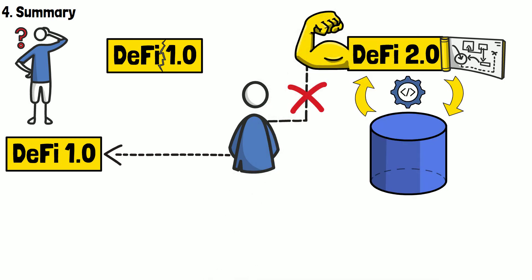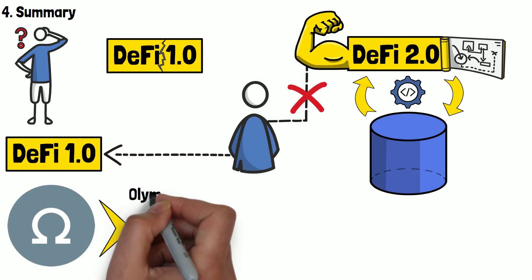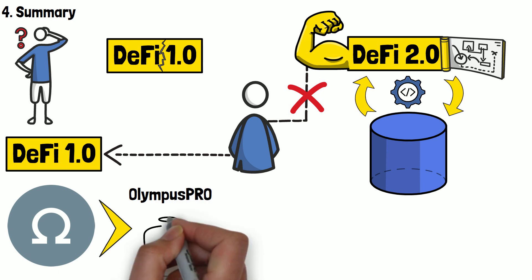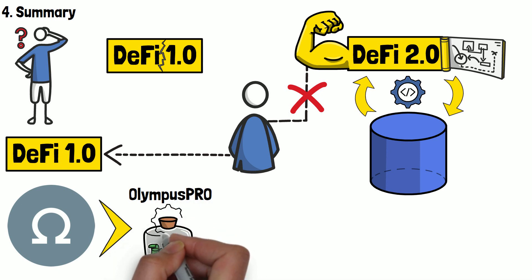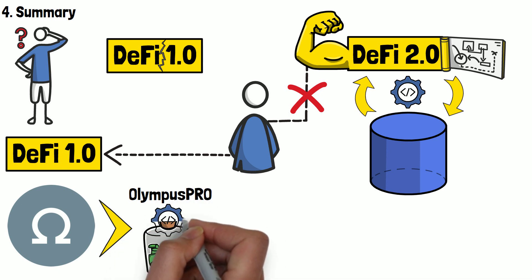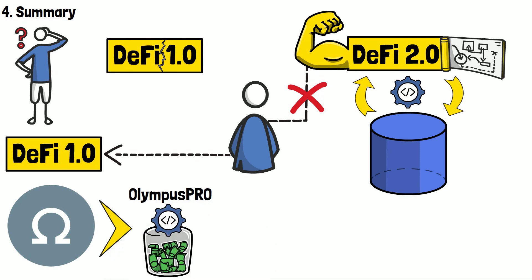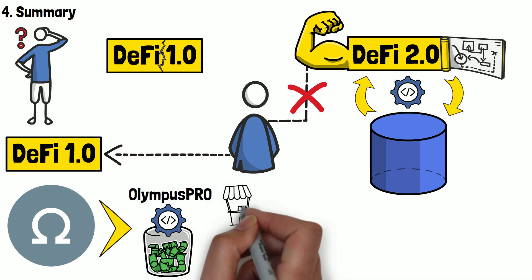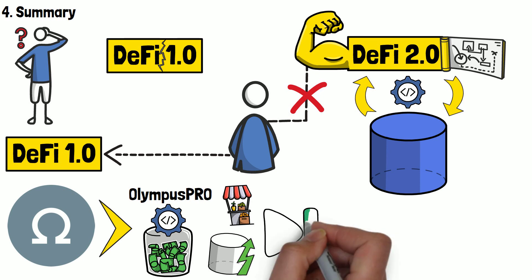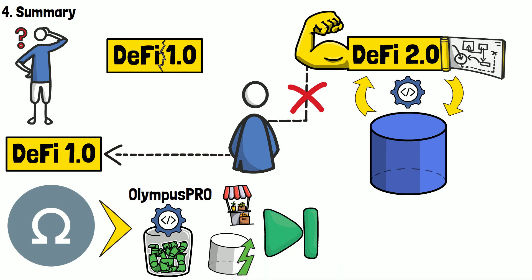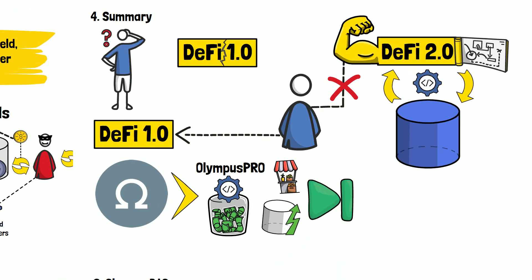Naturally, the topic is even more complex. Olympus DAO itself has launched Olympus Pro, where it offers other projects the opportunity to use the same bonding mechanism in their own tokenomics. Then you have dedicated marketplaces, advanced staking pool functionality, and many more intricacies — but all of these are probably for another video.